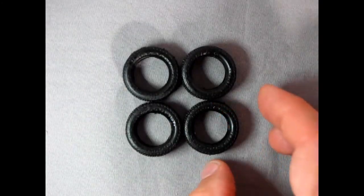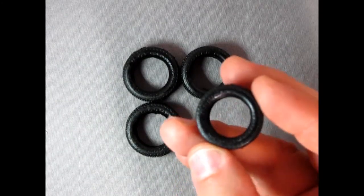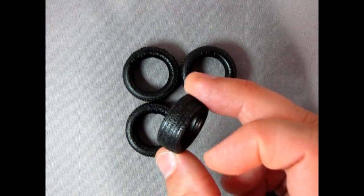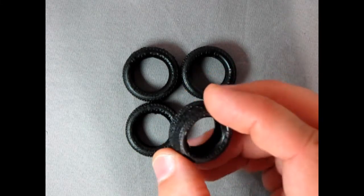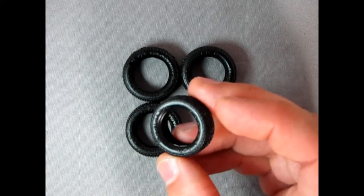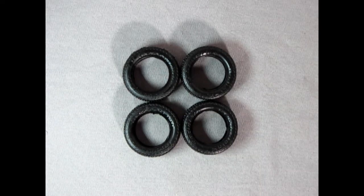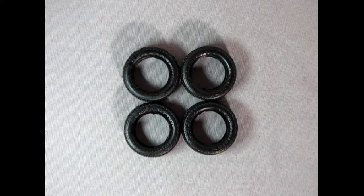Finally, we have our BF Goodrich Radial TA tires, and they have the nice lettering on the sides there. And a very nice tread pattern on this. These are very typical of the 1970s tires. The BF Radials would have been brand new around this time period. And again, these will look very nice on your model car.